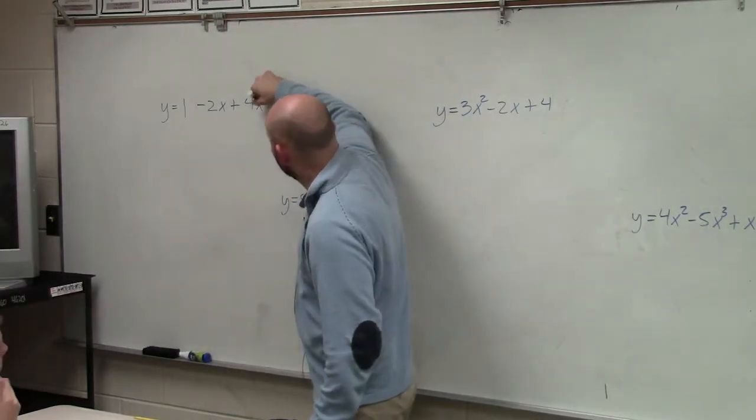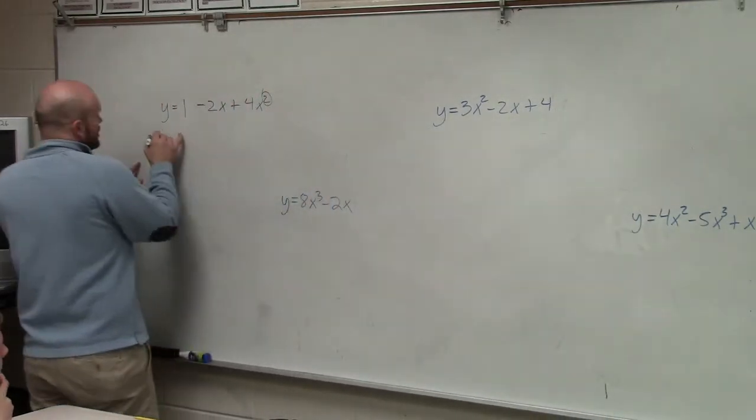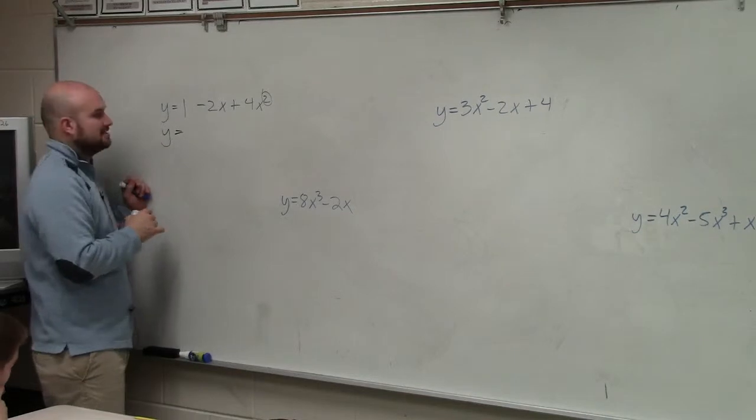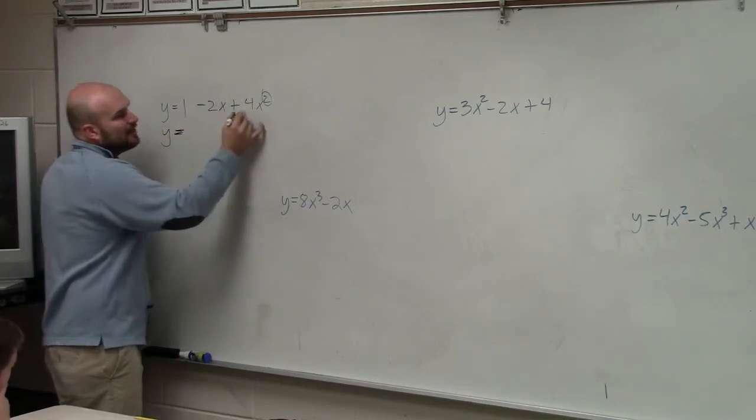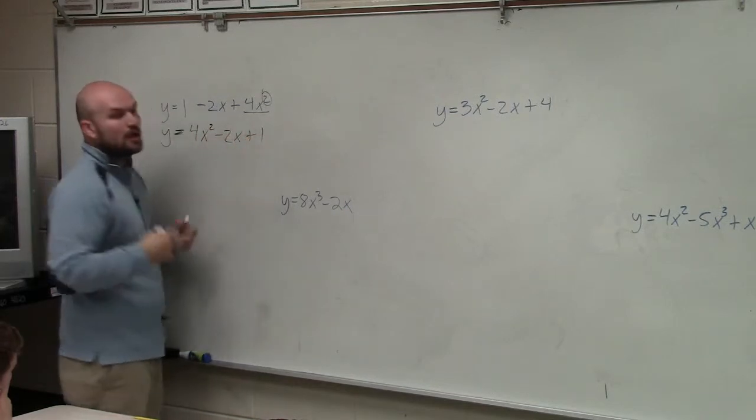So you guys can obviously see that 2 is our largest power. So I'm going to take that term, and I'm going to rewrite that one as the one first. So therefore, I have, and remember, you take the whole term. So that's 4x squared minus 2x plus 1.